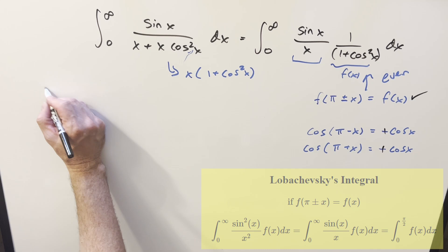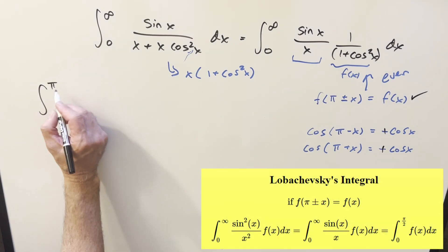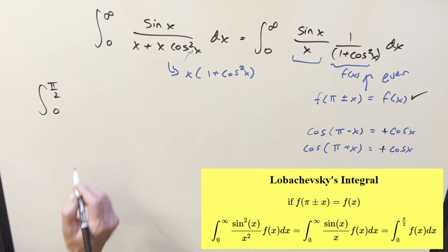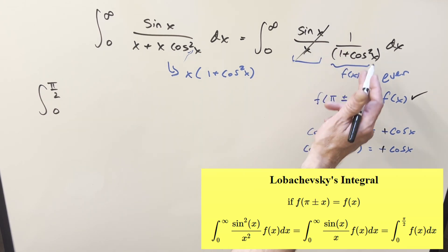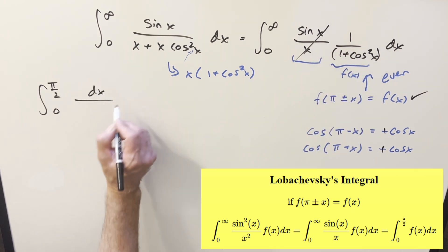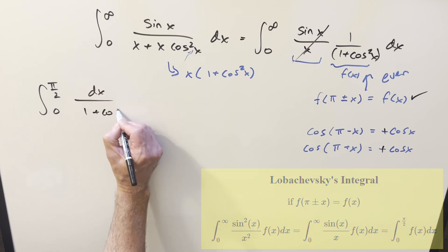So what that's going to allow me to do is I could just use the formula, reduce the integral. Our bounds are going to change. We're no longer going from zero to infinity, now it's zero to pi over two. And we essentially got rid of all this stuff, and now we're just integrating one over one plus cosine squared x.